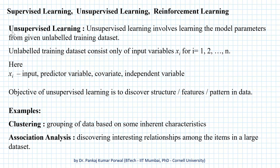The next learning paradigm is unsupervised learning. Unsupervised learning involves learning the model parameters from a given unlabeled training data set. The unlabeled training data set consists of only input variables x_i for i from 1 to n, where x_i is our input variable, predictor variable, covariate, or independent variable. Note that we don't have any output variable y_i given to us.